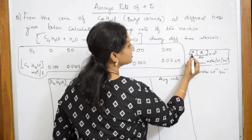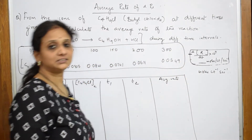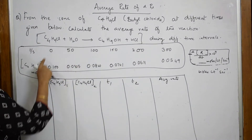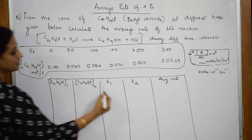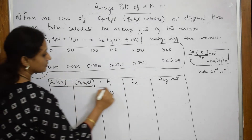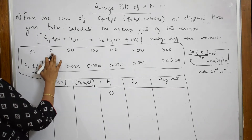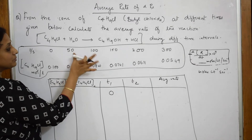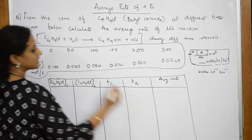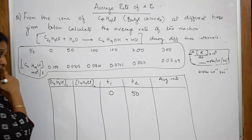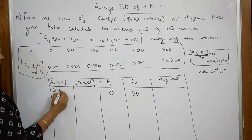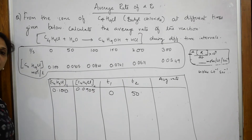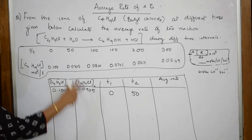Now, this is the data which is given to us. The 0 is the initial value, so fill this at 0. Your time — comparing between this time interval, then this time interval, and so on. For time 0, what is the concentration? For time 50, how much is the concentration? Like that, you will be sorting out everything.